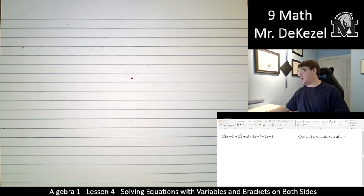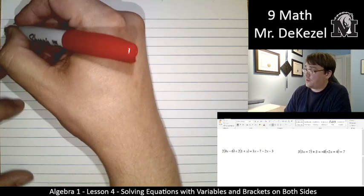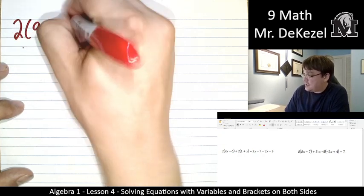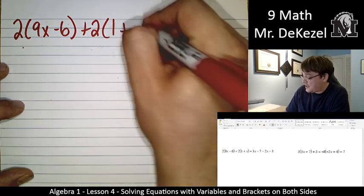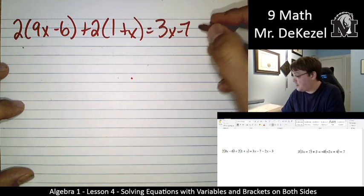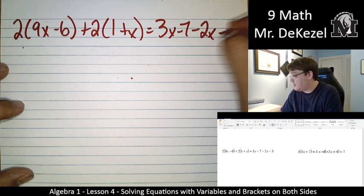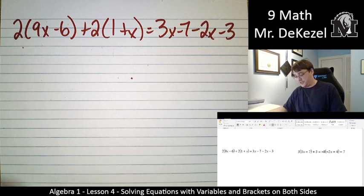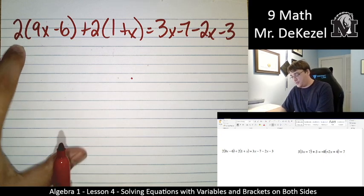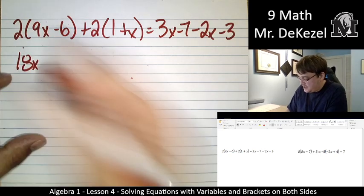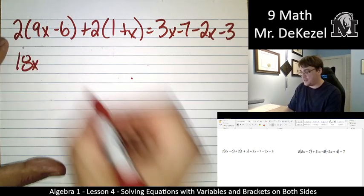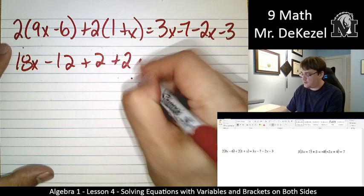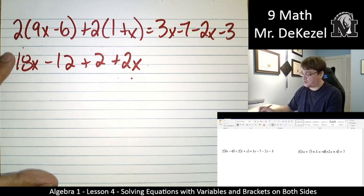Okay, we got a couple of long ones. And this is it for the question. So 2 times 9x minus 6 plus 2 times 1 plus x is equal to 3x minus 7 minus 2x minus 3. All right, I'm going to do a whole bunch of things at once to hopefully simplify this. So let's go along. 2 times 9 is 18, the variable comes along, that's 18x. 2 times minus 6 is minus 12. 2 times 1 is 2, 2 times x is 2x. Both the number and the variable just come along.